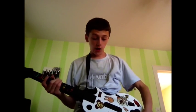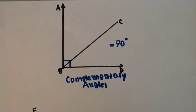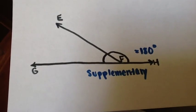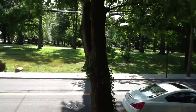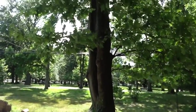Wow, that didn't even work. Complementary and supplementary — C, S, let's give it a shot. C angles always form 90 degrees, while S angles form 180 degrees. Examples of C angles are a TV screen, and examples of S angles are branches of a tree.